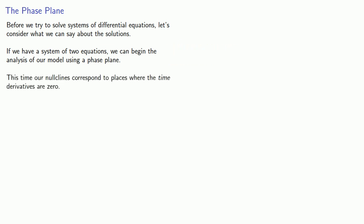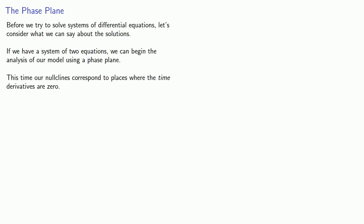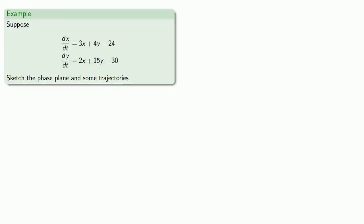Our null clines correspond to the places where the time derivatives are zero. One important idea here is that the independent variable t does not appear in the phase plane. For example, suppose I have a system of differential equations: dx/dt equals something, dy/dt equals something. Here we have our variables x and y, which are assumed dependent on t, and our derivatives are taken with respect to t.